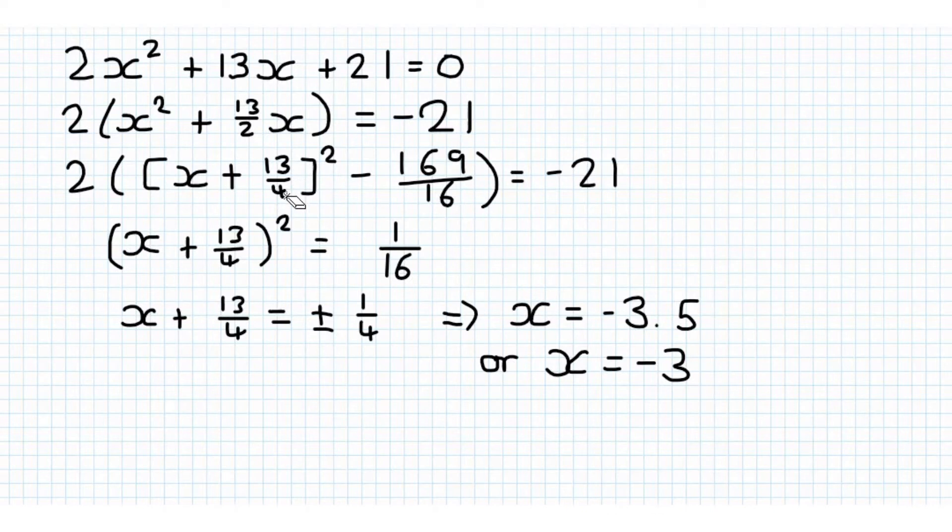Because if we multiply this out, you get x² plus 13/4 x plus 13/4 x plus 169/16. But to be equal to this, you then have to subtract 169/16. So here we go.